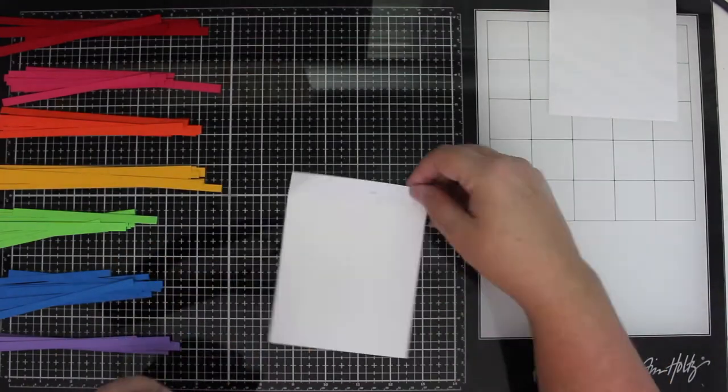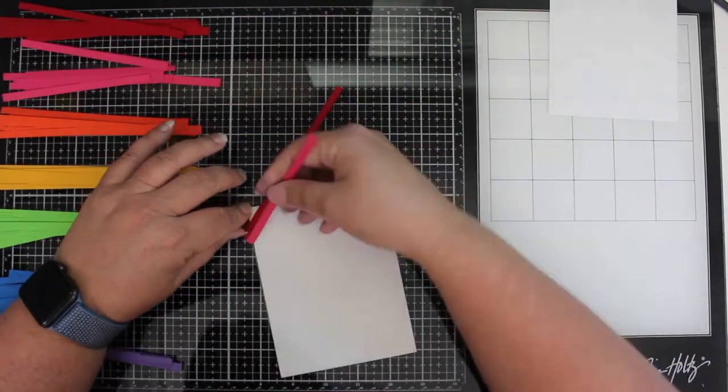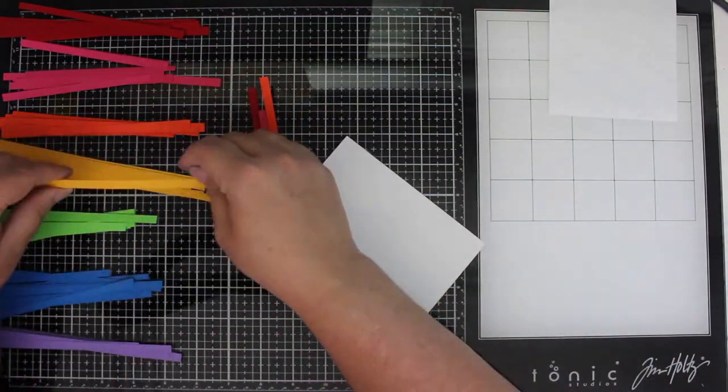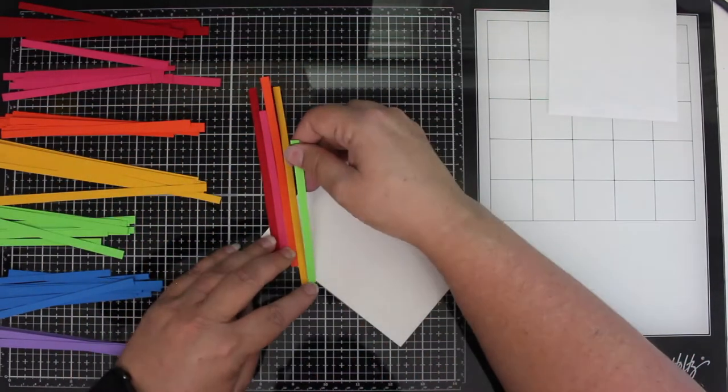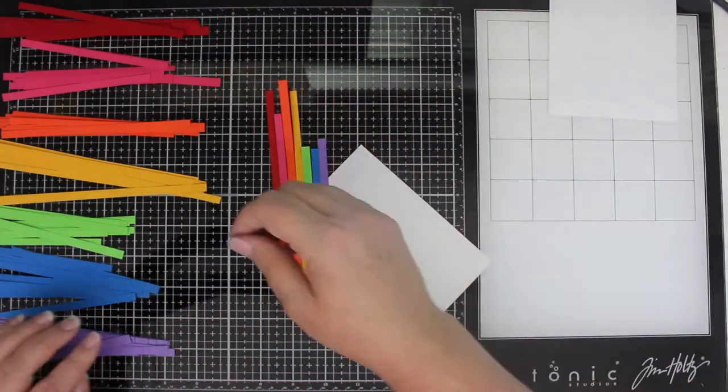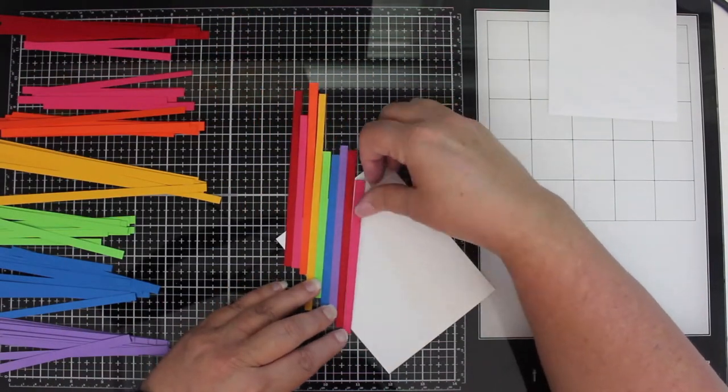Now comes the fun part! I made piles of each color of my paper strips and once I peel off the backing on my adhesive I'll start laying the strips down in rainbow order. This one I'm going to do diagonally and then I have another one a little bit later that I'm going to do just vertically because it's going to be in a vertical position.